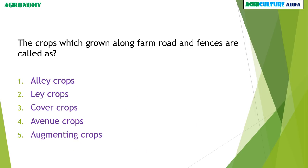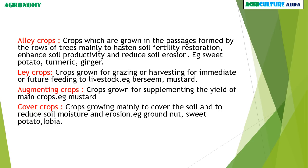Next question: crops which are grown along farm roads and fences are called — early crops, lay crops, cover crops, avenue crops, or augmenting crops? These are the definitions for alley crops, lay crops, augmenting crops, and cover crops.